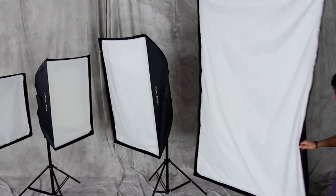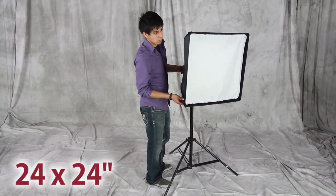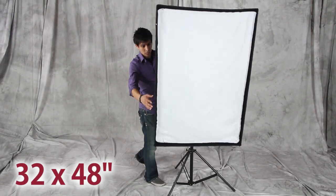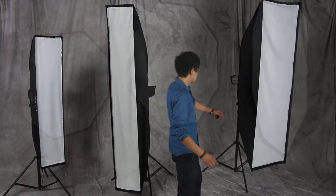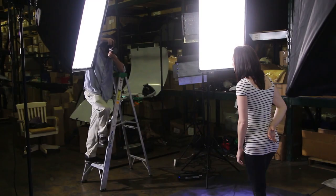PhotoDiox Rectangle Pro softboxes are available in various sizes: 24x24, 24x36, 32x48, and 48x72. We also feature strip softboxes, octagon softboxes, everything you'll need to make your next shoot even more professional.